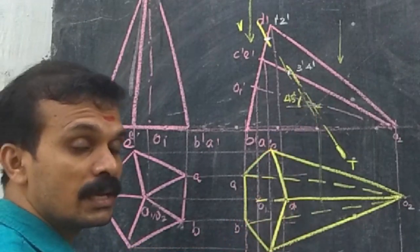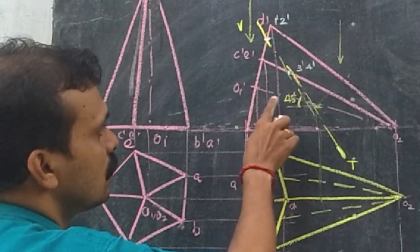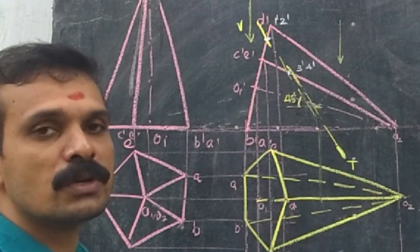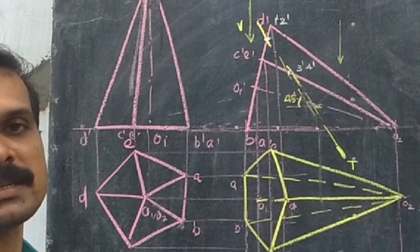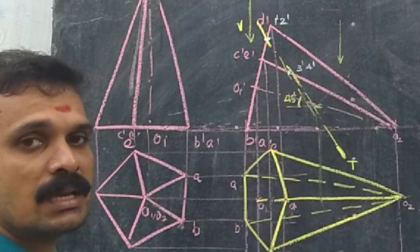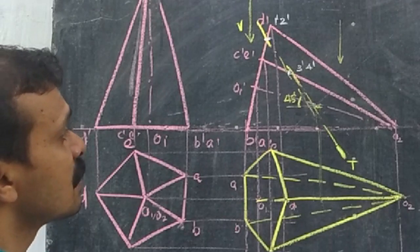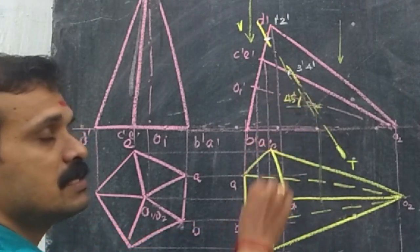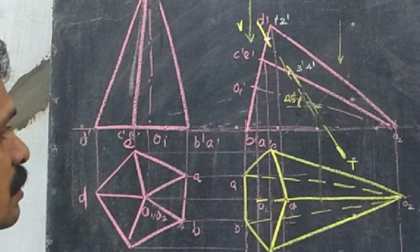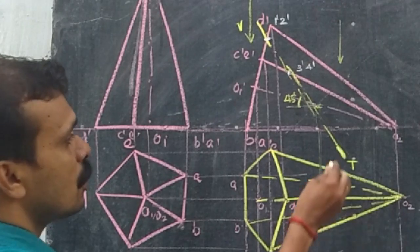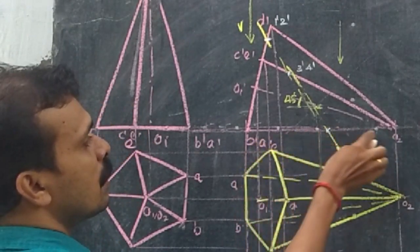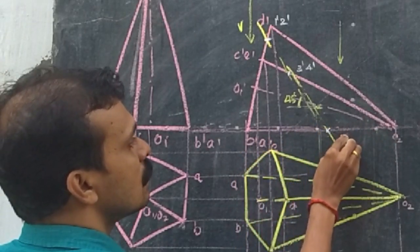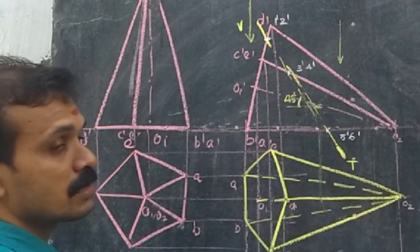Here there will not be any slant edges — O and O2 is only an axis. So there will not be an intersection at that point, because it is an axis. If it were a slant or lateral edge, we could obtain that intersection, but since it is an axis, there will not be any point there. Now we come here — O2B and O2A — so we will get two intersection points, 5-dash and 6-dash.